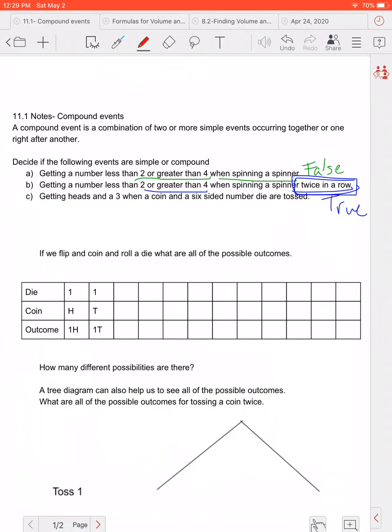So getting a heads and a three when a coin and six sided number die are tossed. Again we have two events. We're getting a head on some sort of coin and a three when we're rolling a die. Okay so again this is still a compound event so this would in fact be true because there's two events happening. And it can be more than two events but at least two.